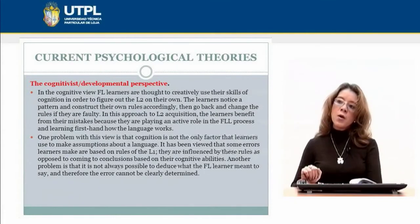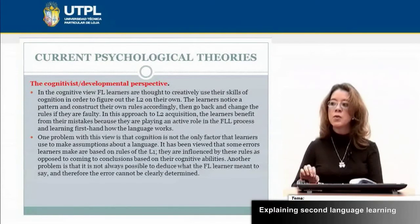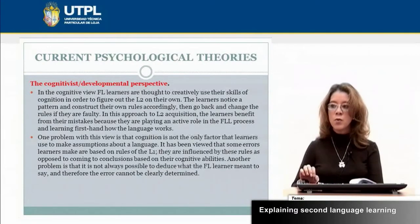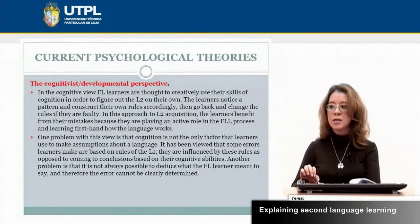The second theory is the cognitive developmental perspective. In this perspective, foreign language learners are thought to creatively use their cognitive skills in order to figure out the second language on their own. The learners notice a pattern and construct their own rules accordingly. They go back and change the rules if they are faulty. In this approach, learners benefit from their mistakes because they are playing an active role in the second language learning process.